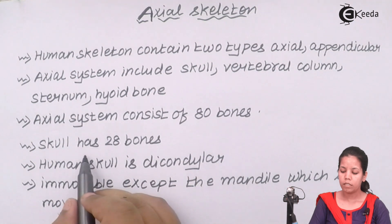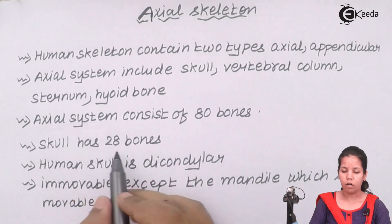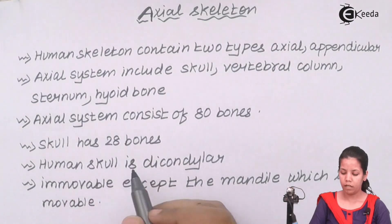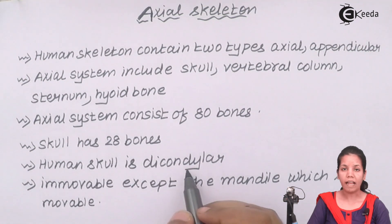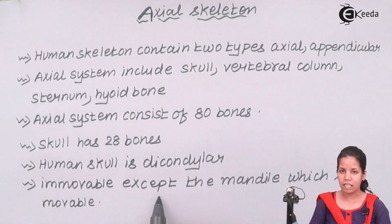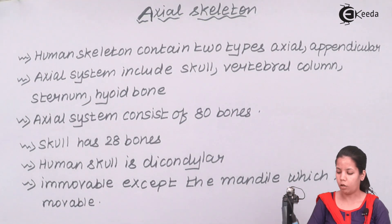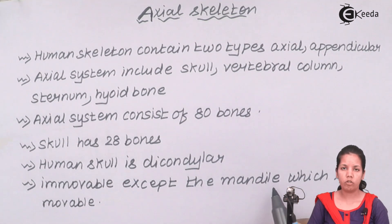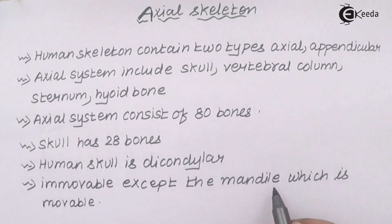The skull has 28 bones together. The human skull is dicondylar and immovable, except for the mandible region. This mandible region is the part that is movable — it is basically your lower chin region, or your mouth region in simple language.